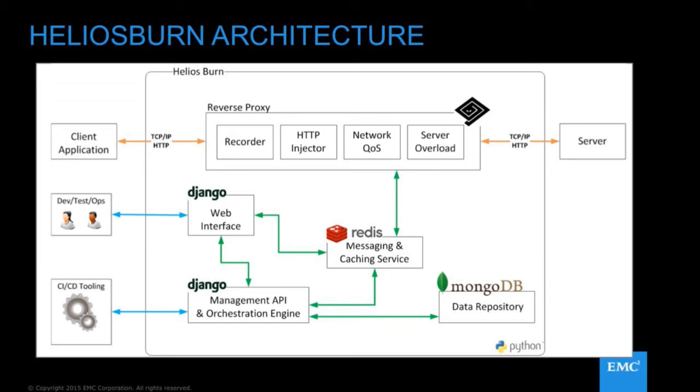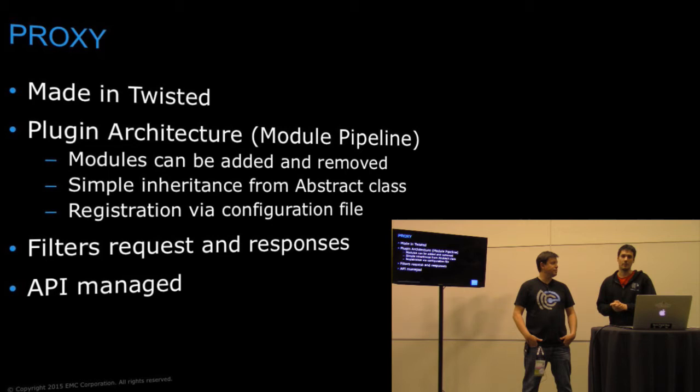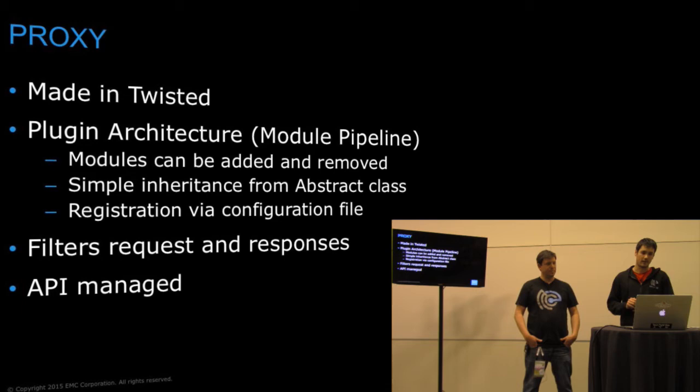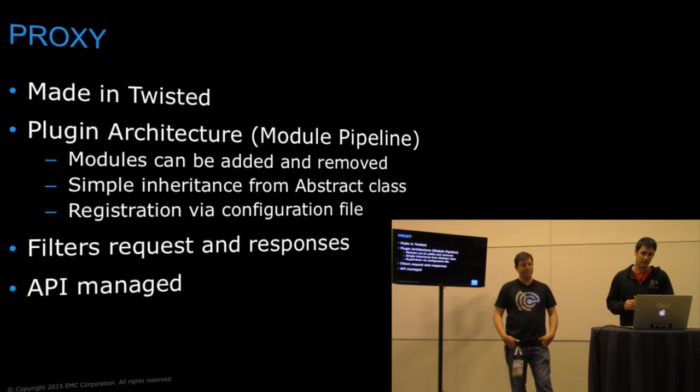The proxy is made in Twisted and we have a plugin architecture. If you've used OpenStack Swift, you're probably familiar with the Swift proxy — it has a module pipeline where you can load, add, or remove modules as you want. We have a similar architecture: you have a configuration file where you specify all the different modules you want to load in, with specific and concrete configuration for each one. That acts as a registry for the proxy.